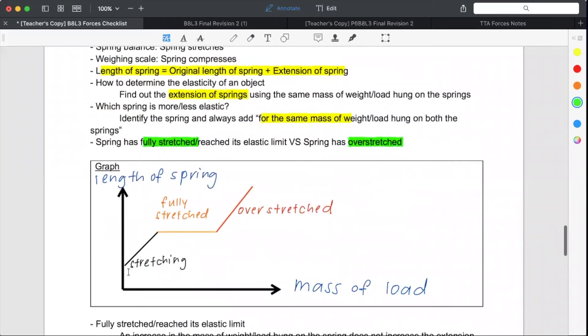For instance, in this case, this is length of the spring. Take note, length of the spring is the original length plus the extension. So look at here, when it's stretching, when the mass of the load added is zero, the length of the spring is not zero because without adding anything, there's a length. The spring is of a certain length.